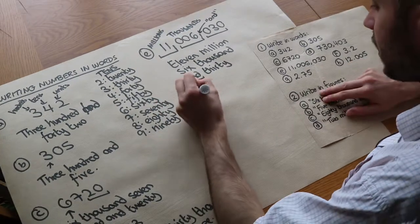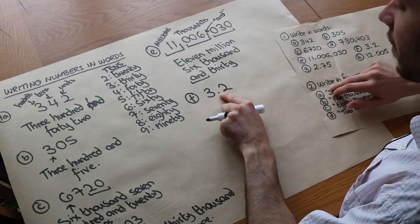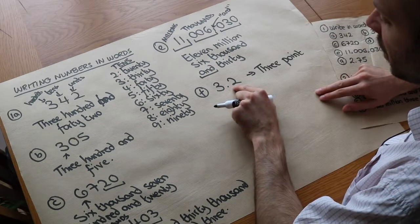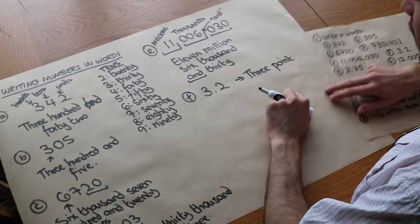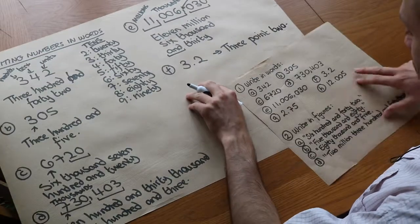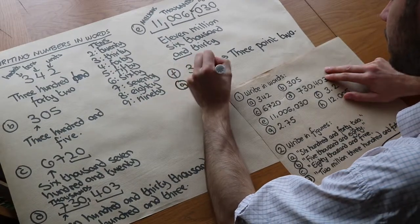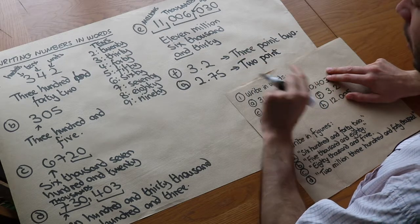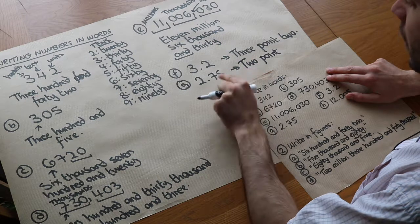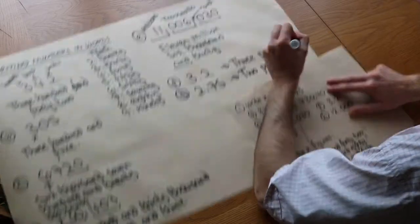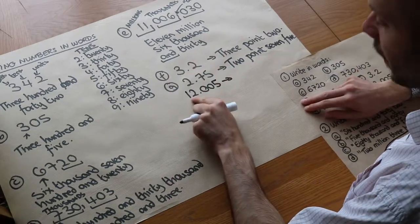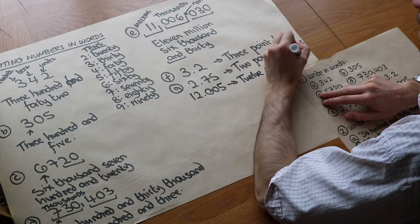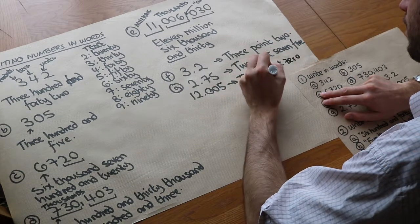What about when we have decimals? We write the decimal point as 'point'. Any digits after the decimal point — we don't say their place value, we just list the digits individually. So three point two is just 'three point two'. For G, two point seven five, we say 'two point seven five'. For the next one, twelve point zero zero zero five, we say each digit: 'twelve point zero zero zero five'.